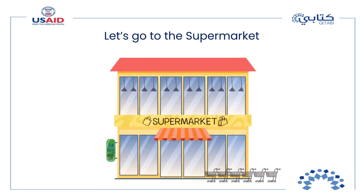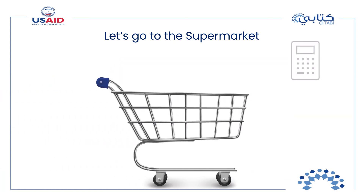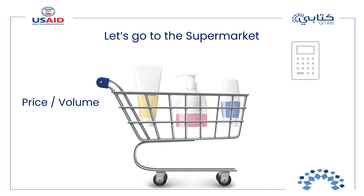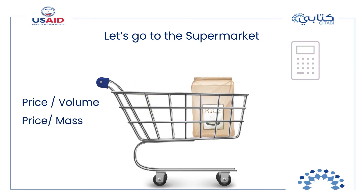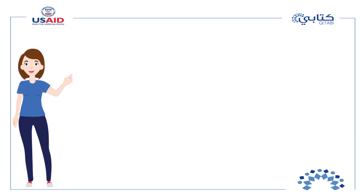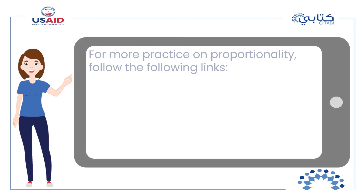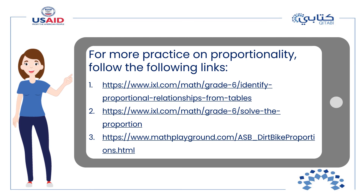Now let's go to the supermarket — you will need your calculator. Choose an item that comes in different sizes, such as a shampoo bottle, and compare the ratios of price to volume for the different bottles. If the ratio is the same, the price is proportional to the volume; otherwise, choose the most economical size. Do the same with products of different masses, such as rice or instant coffee. Warning: special offer logos can be misleading — you are all experts now, don't let yourselves be misled. This is the end of our lesson on proportionality. I'll share links with exercises to help you practice and better understand proportionality. See you soon!